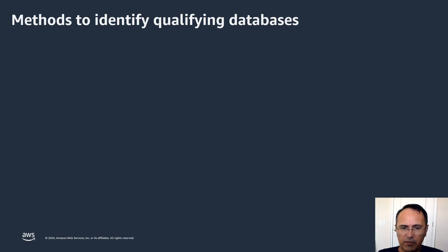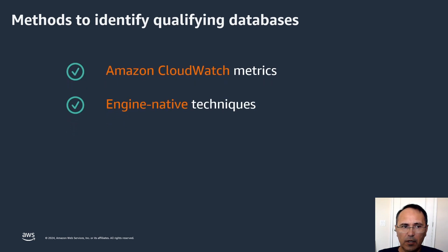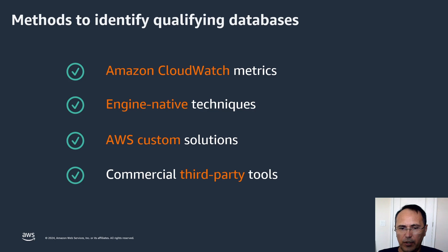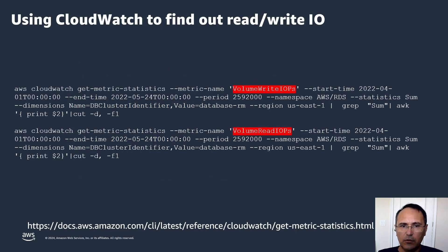Let's look at specific methods to identify exact workloads. There are a couple of ways: we could use CloudWatch metrics, database engine-specific metrics, and if you're on a specific server such as Oracle or SQL Server, we have custom solutions that solve all this for you without writing any code. There are also third-party products available. CloudWatch metrics, if you're already in AWS, are available to you and can be used to find out the read-to-write ratio on your database.